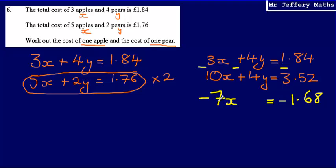So negative 7x is equal to negative £1.68, which means that x is going to be negative £1.68 divided by 7, which is going to give me 24, so 0.24. So my first answer is that x is equal to 0.24 or 24p.